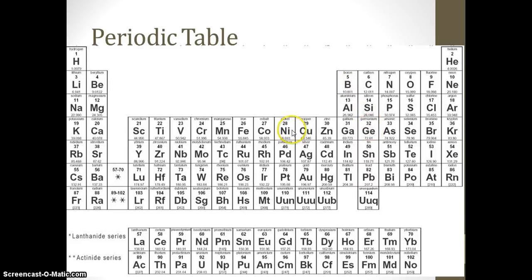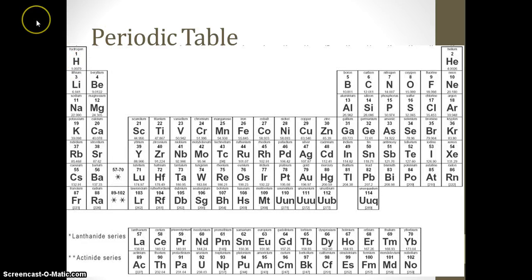Everything on the left of the staircase will be metals, including the rare earth metals. Everything on the right of the staircase will be non-metals, plus hydrogen. Remember, hydrogen is also a non-metal. Hydrogen is located on top of the alkali metals, but that doesn't make it an alkali metal.